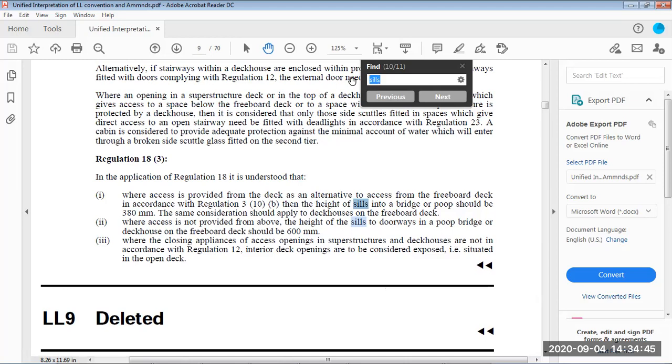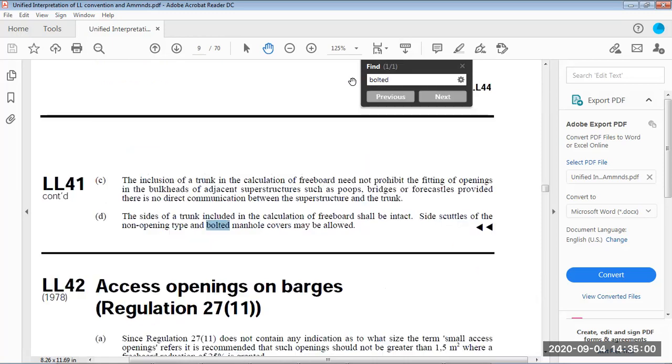This way, the openings which have a combing height above 300, 600 as per the requirement, 1 meter, they can be weather tight because they are not having any head of pressure and also we are not having any water inside. They are only exposed to water and they need to be weather tight only.